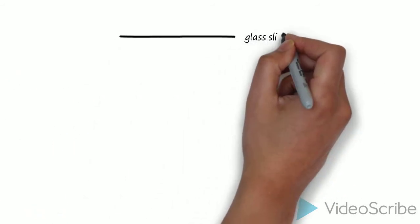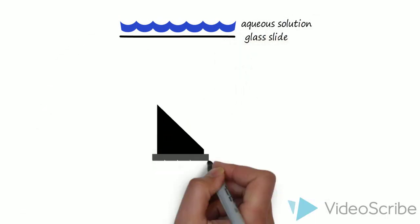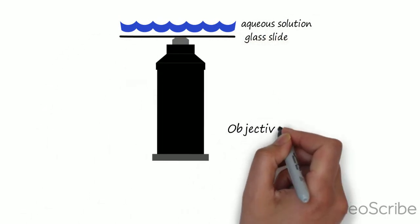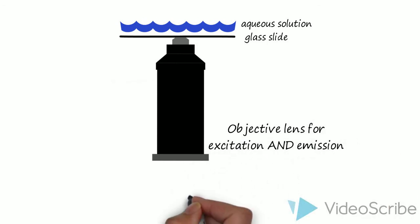Unlike P-TIRF, objective-based TIRF has excitation and emission parts of the microscope situated on the same side of the sample. In fact, they share the same objective lens, which sits below the sample in an inverted configuration.